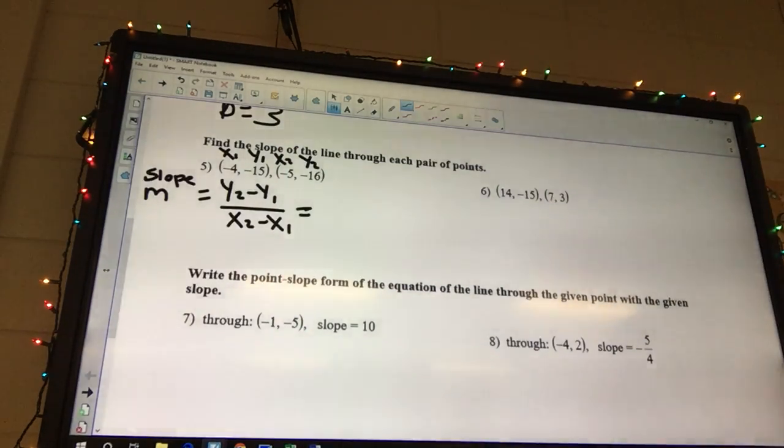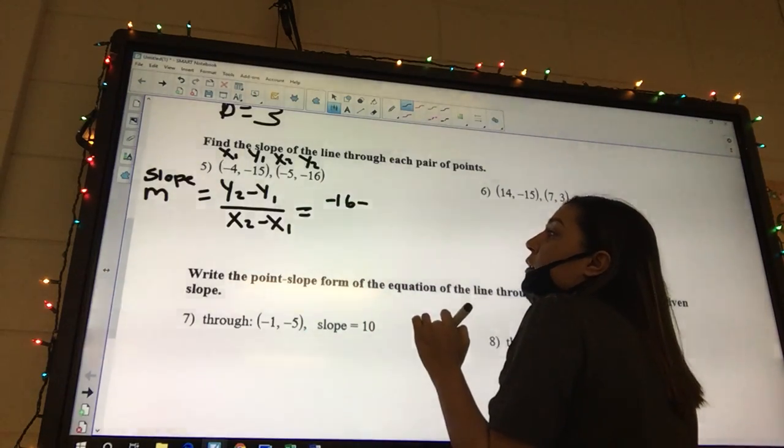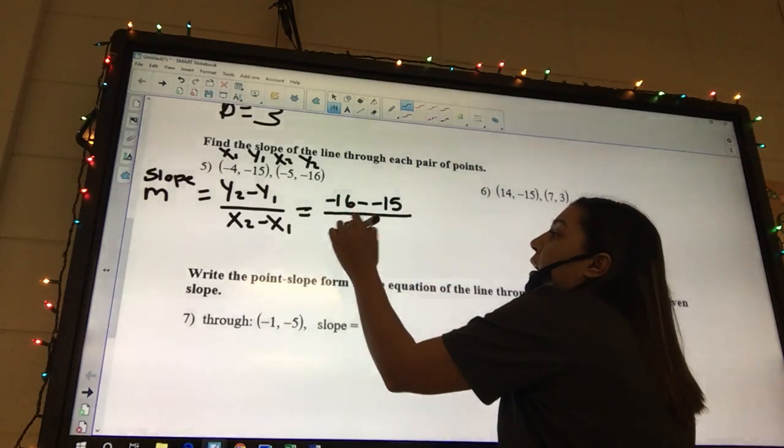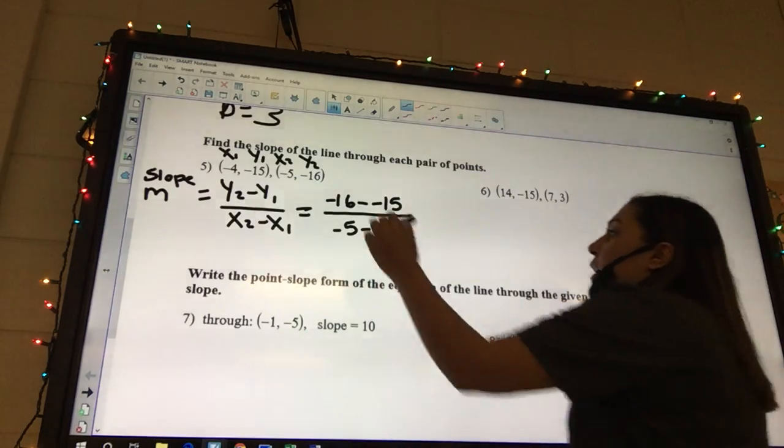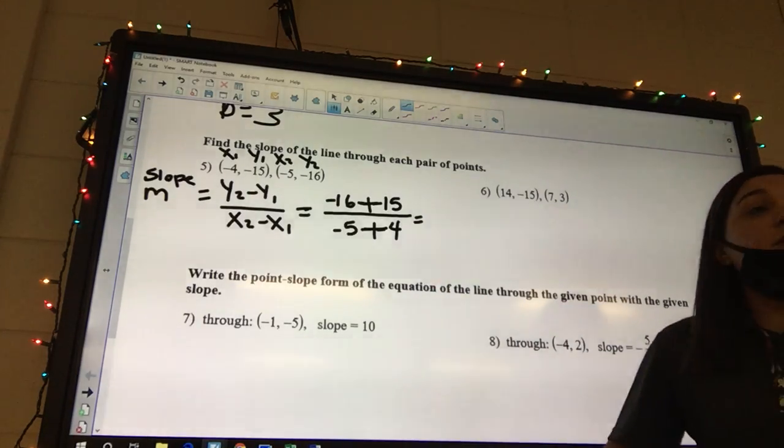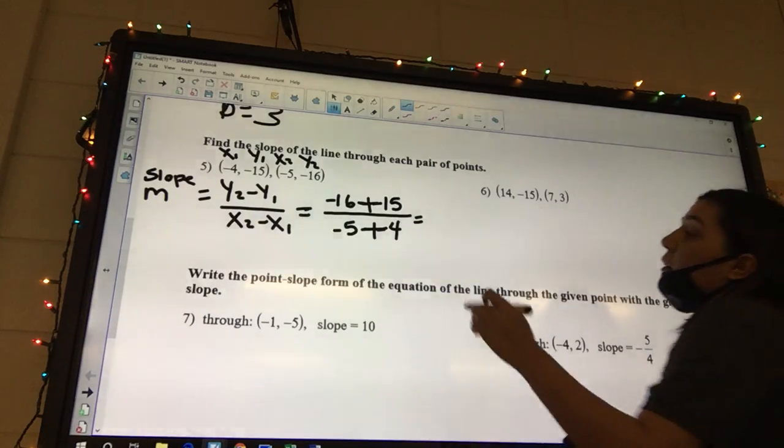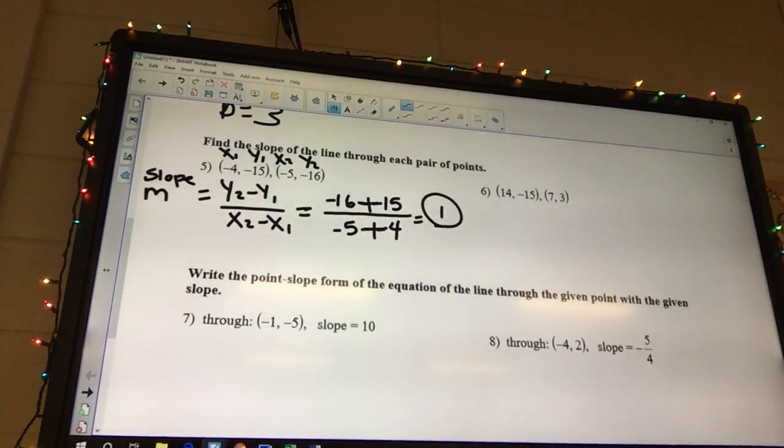What is my y2? Negative 16. Negative 16 minus negative 15. And then I got negative 5 minus negative 4. Yeah. And so you can change these minus minuses to a plus. And if you type in all this on the calculator, it's going to spit out your correct answer. So it is just going to end up being 1.